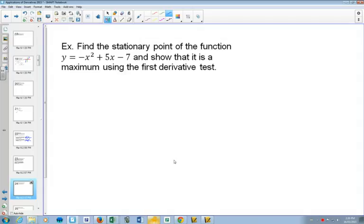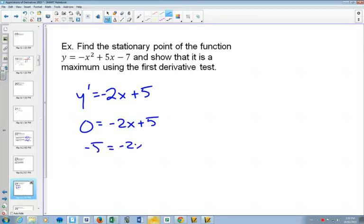Here we've got our function. If we take our derivative, we're going to get negative 2x plus 5. Setting our derivative equal to 0, we get x is equal to 5 over 2. That's going to be our critical point.